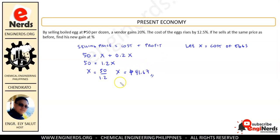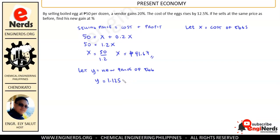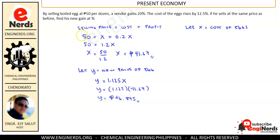Now let y equal the new cost of the eggs after the price change. Since the cost increased by 12.5 percent, y equals 1.125 times x, and since x equals 41.67, we get y equals 1.125 times 41.67. Therefore y equals 46.875 pesos — that is the new cost of one dozen eggs.